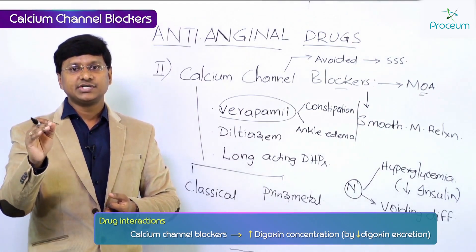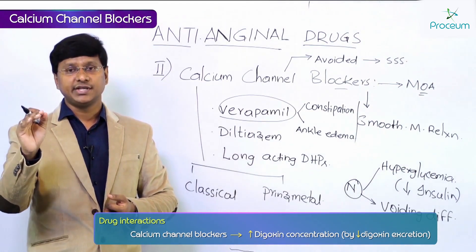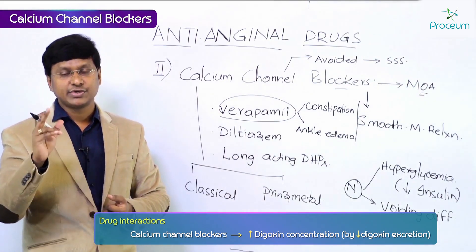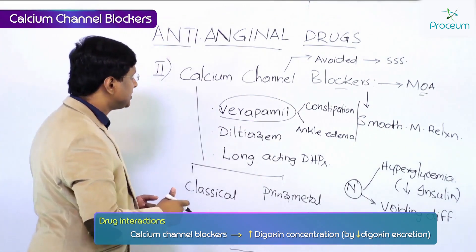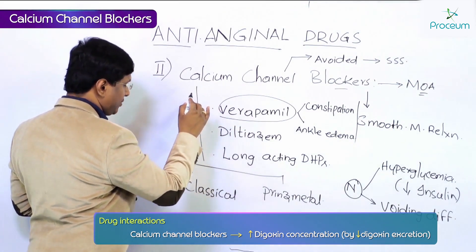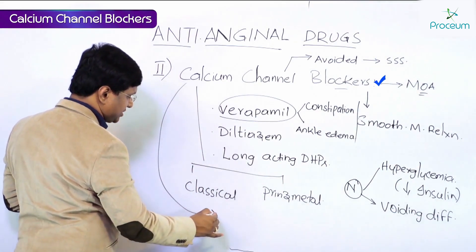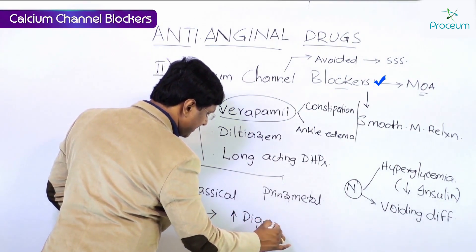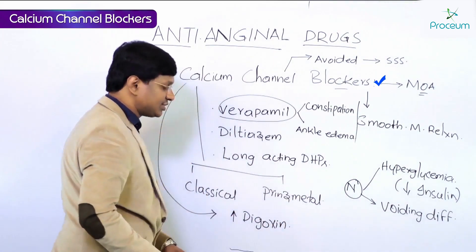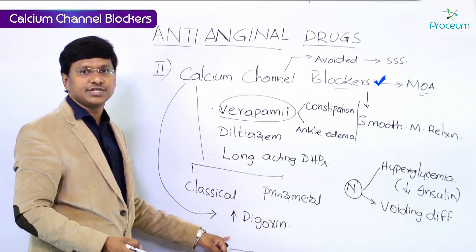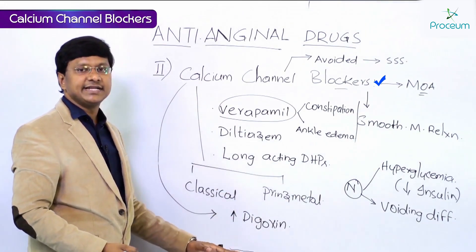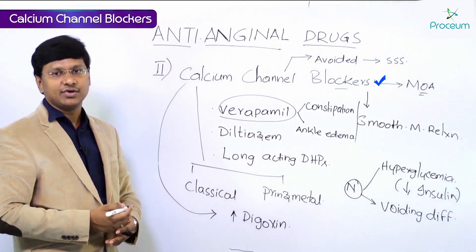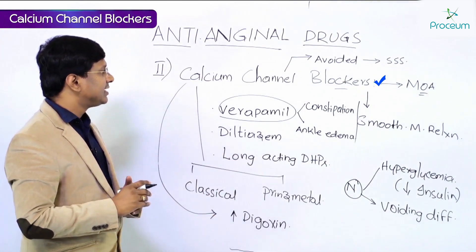Another important drug interaction to remember: calcium channel blockers will increase the plasma digoxin concentration by decreasing its excretion. So calcium channel blockers decrease digoxin excretion, thereby increasing digoxin concentration.